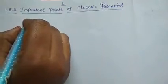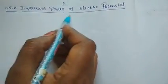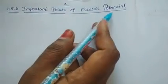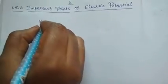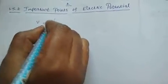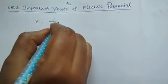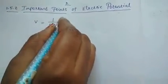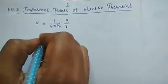Good morning to all. Next, we are seeing the important points of electric potential. We already know that electric potential V is equal to 1 divided by 4 pi epsilon-zero, into q divided by r.